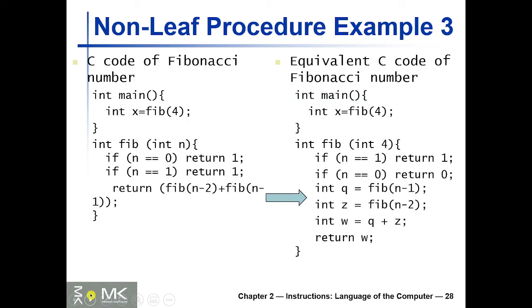Let's see how we can write this in a simpler form so that conversion to MIPS is easier. The return line — Fibonacci returning Fibonacci(n-1) plus Fibonacci(n-2) — is more complicated and can be decomposed into simpler instructions. We can say: int q = Fibonacci(n-1), int z = Fibonacci(n-2), then w = q + z, and then return w.